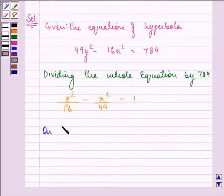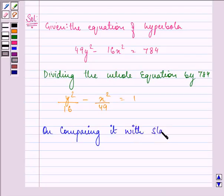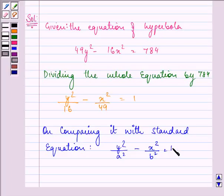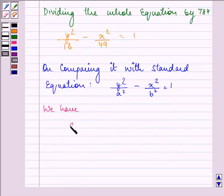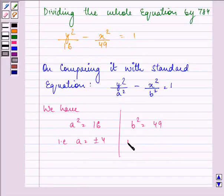Now, on comparing it with standard equation, that is y²/a² - x²/b² = 1, we have a² = 16, that means the value of a is ±4, and b² = 49, that means the value of b is ±7.